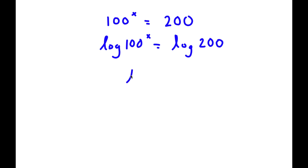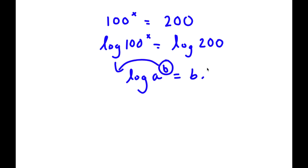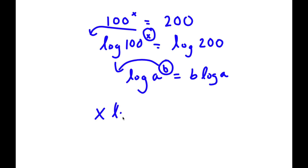Now, if I have something in the form log a to the power of b, I can move my exponent b to the front. So this is going to equal b times log a. So for log 100 to the power of x, I can move x to the front. So now I have x times log 100 is equal to log 200.